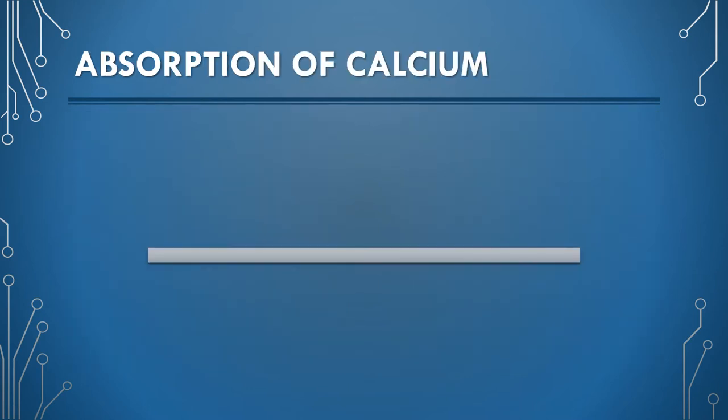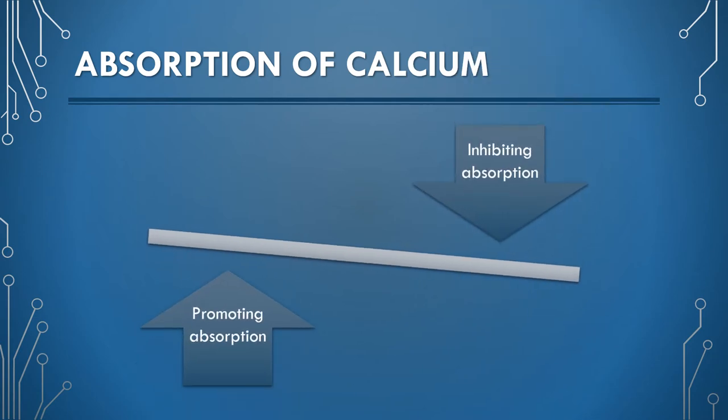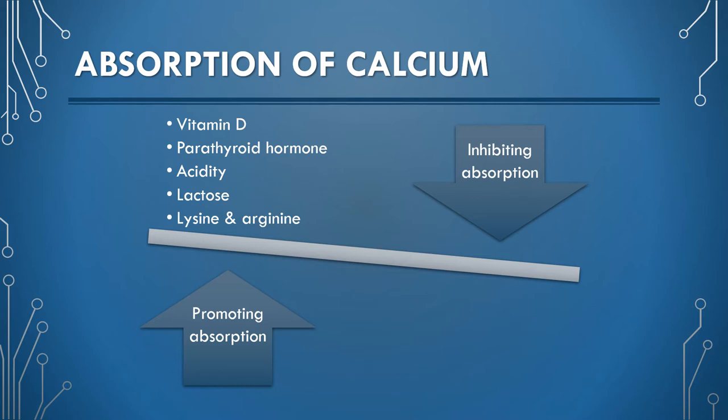Most of the calcium is absorbed from the duodenum through an active transport mechanism. The factors that promote the absorption of calcium are vitamin D, parathyroid hormone, acidity, lactose, and amino acids like lysine and arginine.